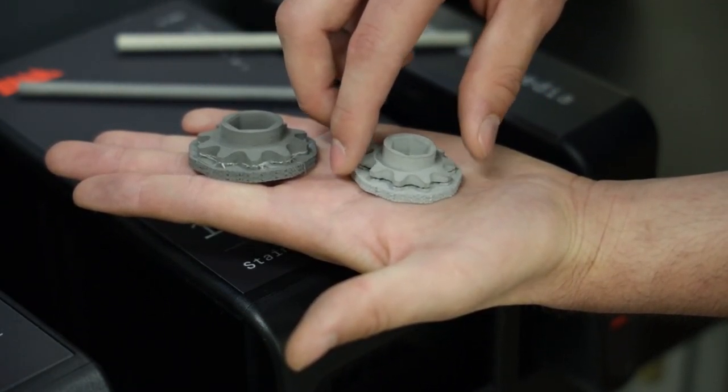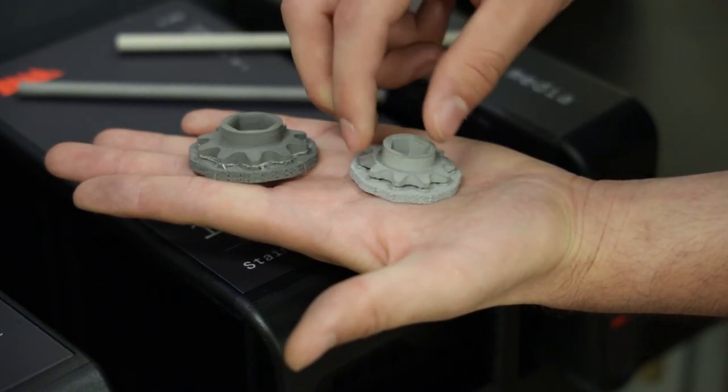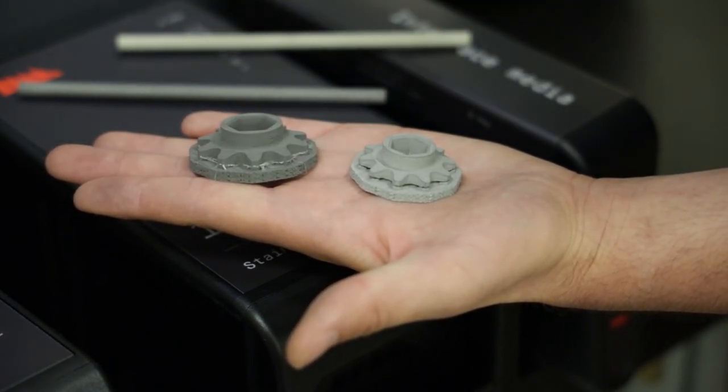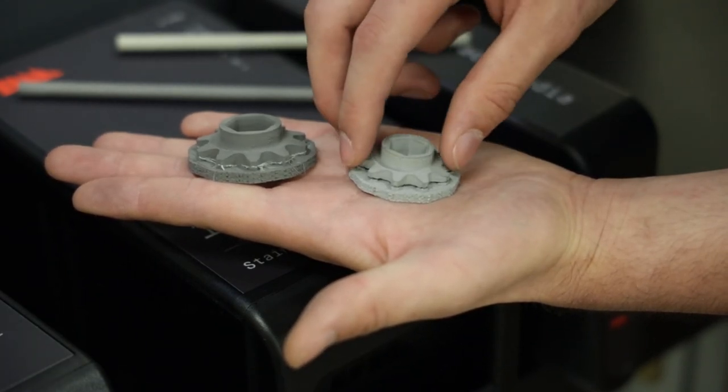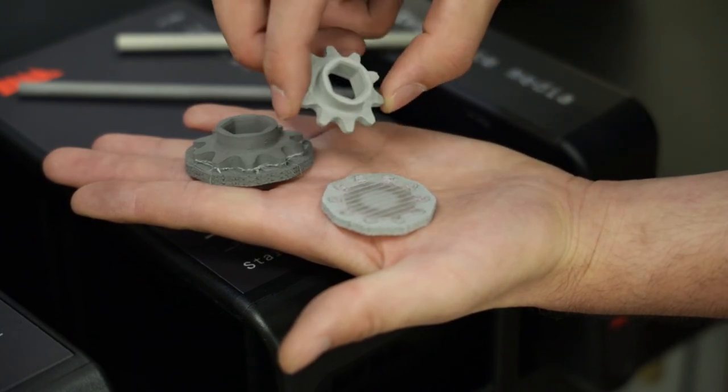After it comes out of the sintering furnace, that interface material turns into a powder and it can be removed by blowing on it or brushing it away. And then the raft becomes separated from the part itself.